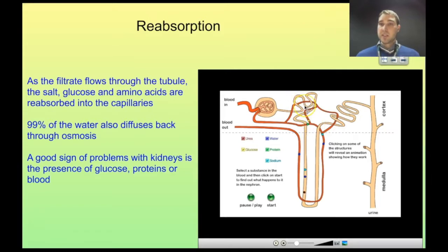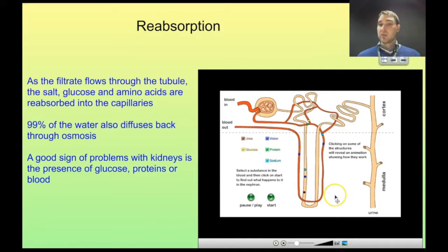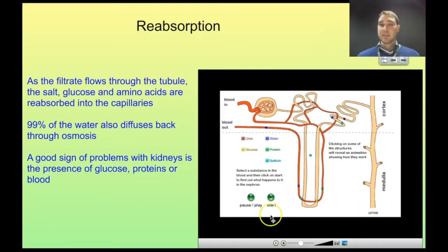In the proximal convoluted tubule we get some reabsorption: glucose gets reabsorbed, sodium gets reabsorbed, and some water gets reabsorbed — though not all of the sodium and water, just some. So our filtrate no longer contains any glucose, but still has water, urea, and sodium. Passing on through, we get some more sodium coming out in the loop of Henle, and some more water coming out too. Now let's see what happens as they pass into the collecting duct.